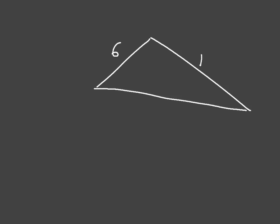Let's say we're given a triangle where one side length is 6, another is 11, and another is 14, and we're asked to find this interior angle, which we'll call M. Looking at this triangle, we can see that we're not given a single interior angle, and we can see that we're given all three side lengths. This means we can use the cosine rule.